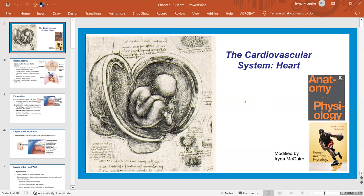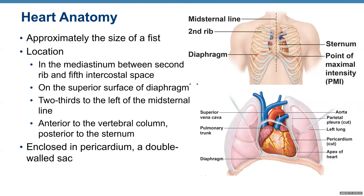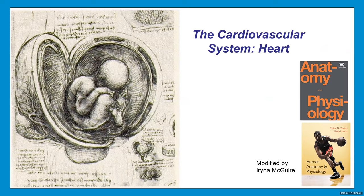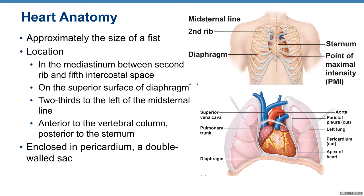Today we're covering the cardiovascular system — the heart. So heart anatomy: approximately the size of a fist, located in the mediastinum between the second rib and the fifth intercostal space on the superior surface of the diaphragm.